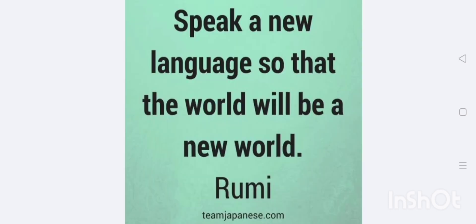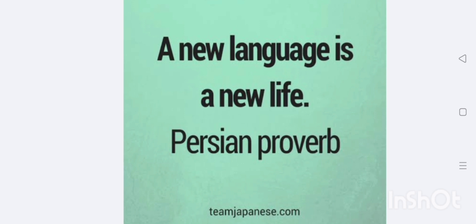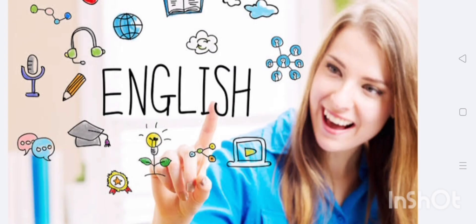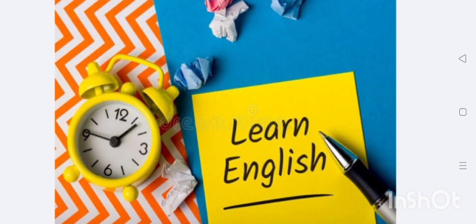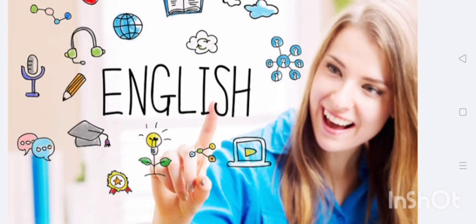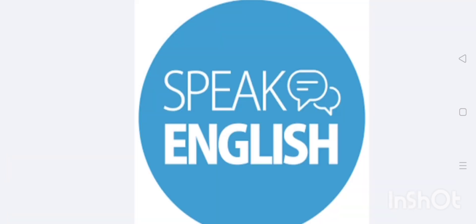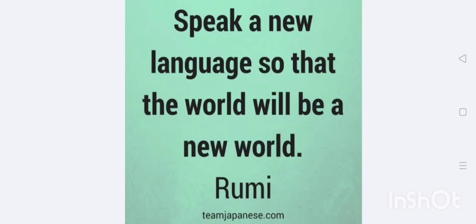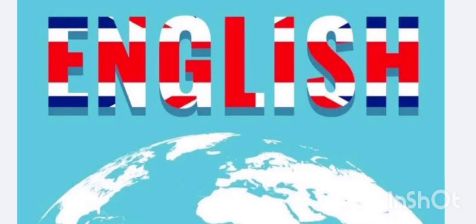The last form of '-ing' that I want to explain is the '-ing' form after a preposition. The example is: 'They complained about driving in rush hour.' Before the word 'driving', we can see the word 'about', which is a preposition. So this is called the '-ing' form after a preposition.